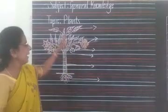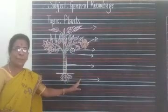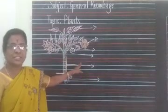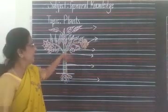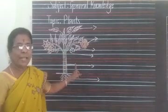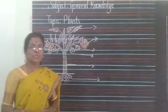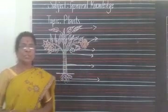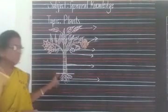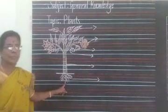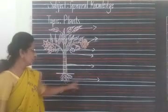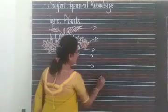This is a diagram of a plant. Now let's know about the parts of the plant. Here we can see roots. These are roots.